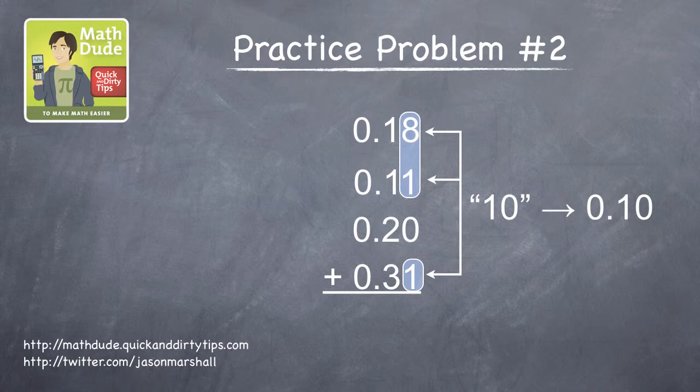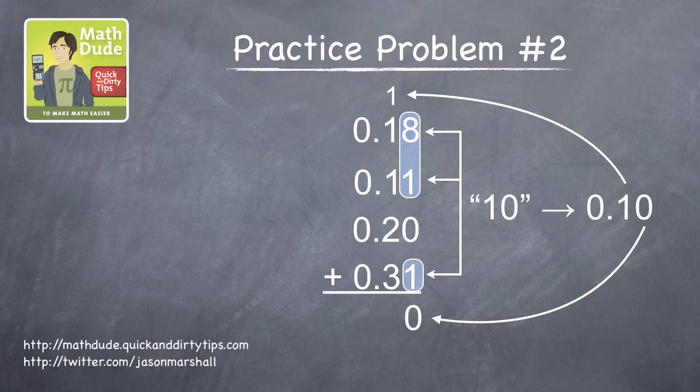Okay, let's write the 0 below, carry the 1 up top, and then add the numbers in the tenths column. 3 and 2 is 5, plus 3 more is 8, which is eight-tenths. And that's the final answer.